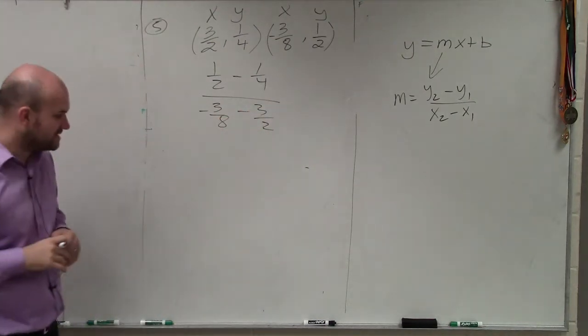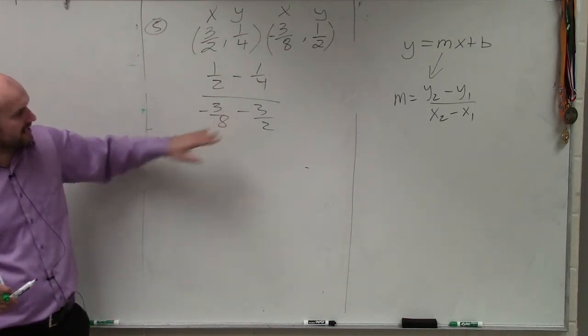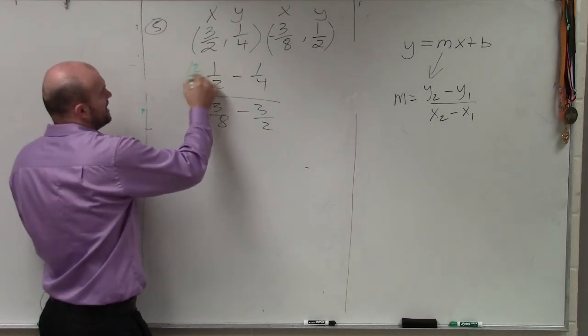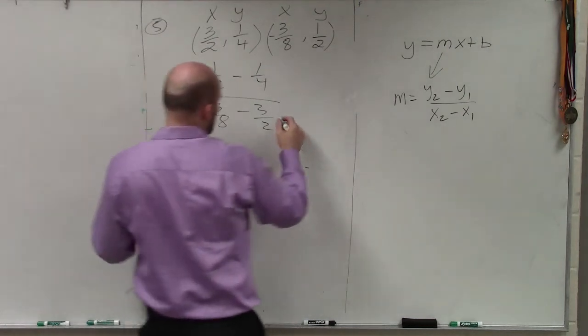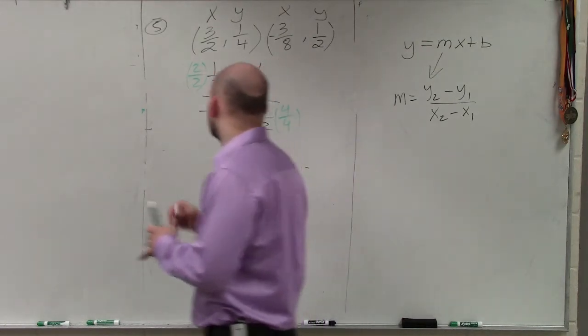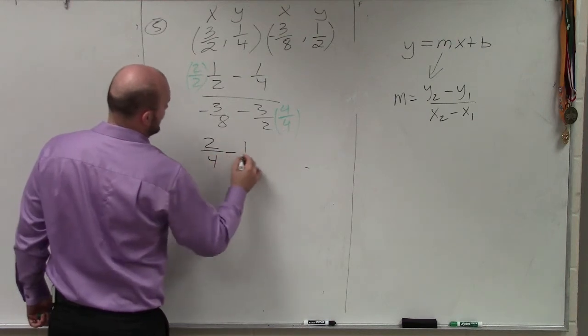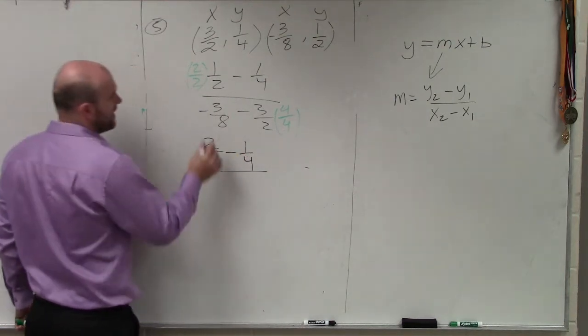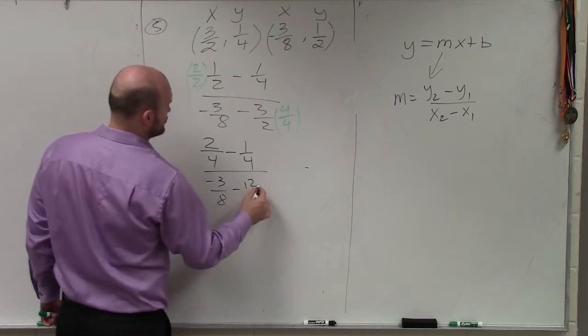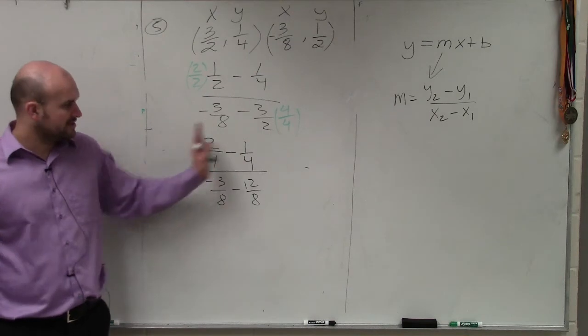Now you notice in this case that neither of my fractions have the same denominator. But fortunately, I can quickly have them have common denominators if I just multiply this fraction by 2 over 2, and this fraction by 4 over 4. Therefore, now I obtain 2 fourths minus 1 fourths divided by negative 3 eighths minus 12 eighths. Right? Now I subtract across.